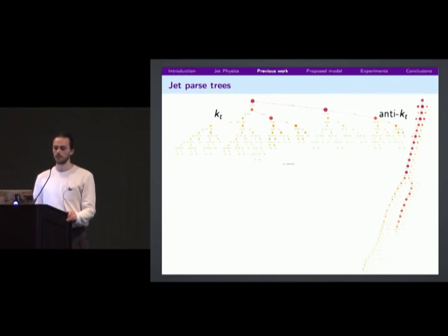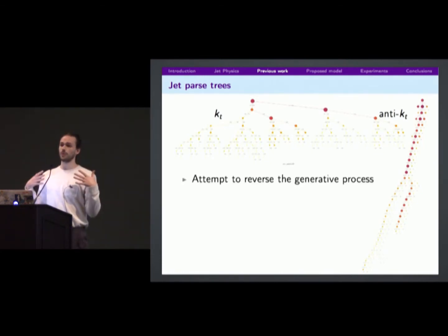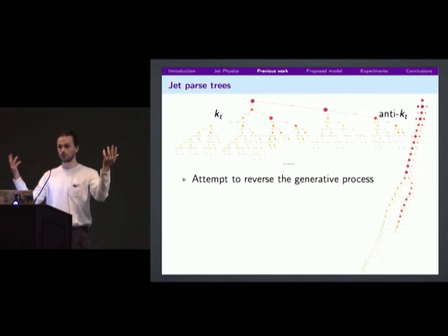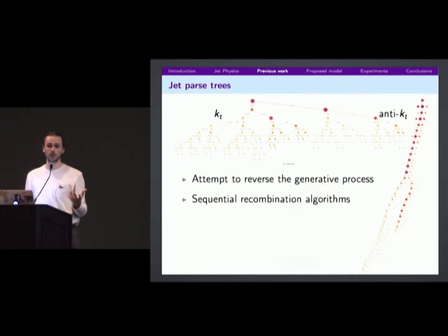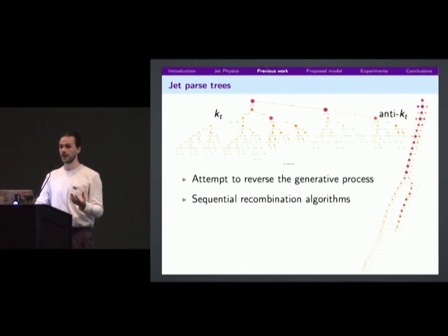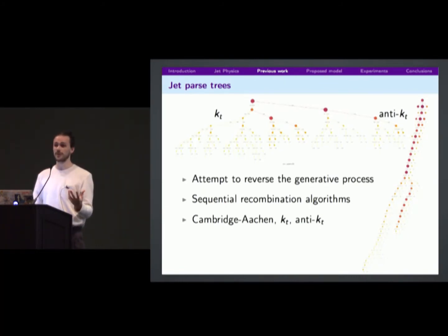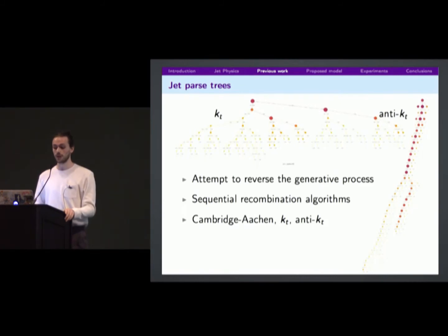Another idea is clustering the particles. You have some generative forward model that took some particles and produced more particles, and you can try to reverse that process through a clustering algorithm, building a tree leading back to the original progenitor particle. These are called sequential combination algorithms — greedy clustering algorithms with a distance metric on particles, taking the two nearest and clustering them. Metrics include Cambridge-Aachen, kT, and anti-kT, which are physics-motivated.